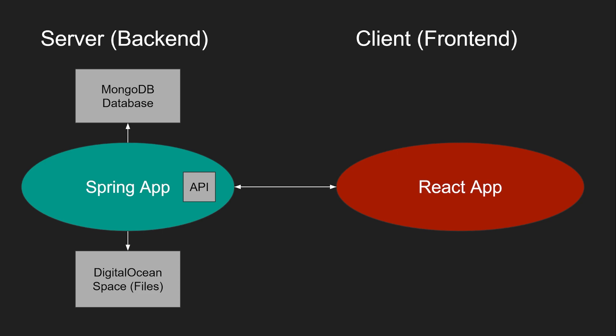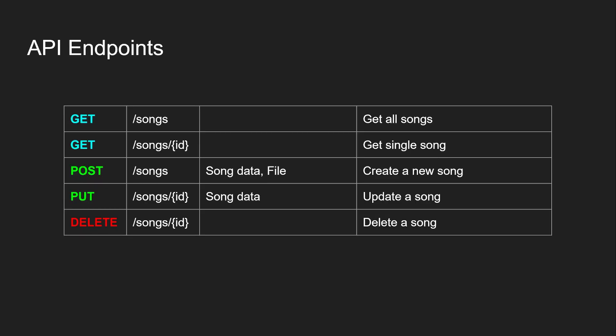You may have heard of the MERN stack — MongoDB, Express.js, React.js, and Node.js. In this case we'll use what I'm calling the MSRN stack: MongoDB, Spring, React.js, and Node.js. Spring is very popular in the job market, so this is great practice especially for Java developers looking to build a portfolio application.